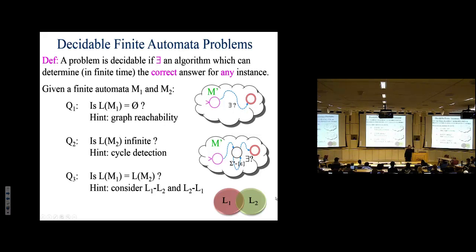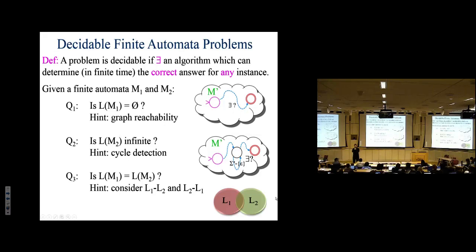Now you have a machine that accepts the difference of the languages. What do you do with it? Apply the subroutine from question one — which determines whether a machine's language is empty. If the language of the cross-product machine is empty, that difference is empty.